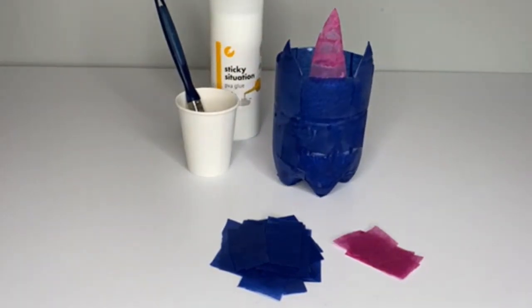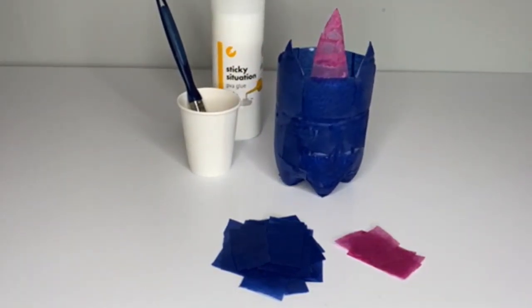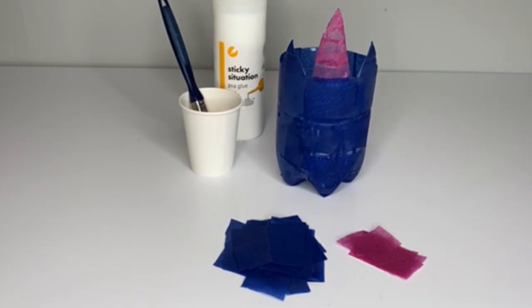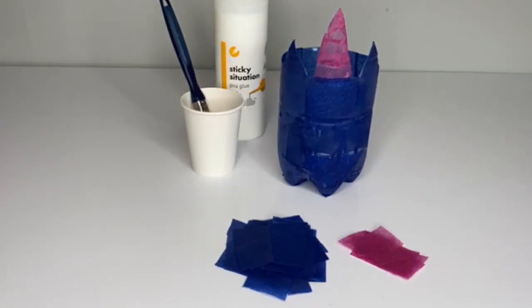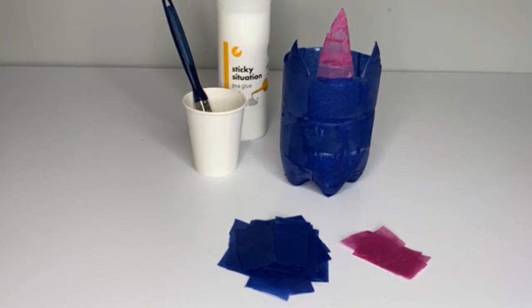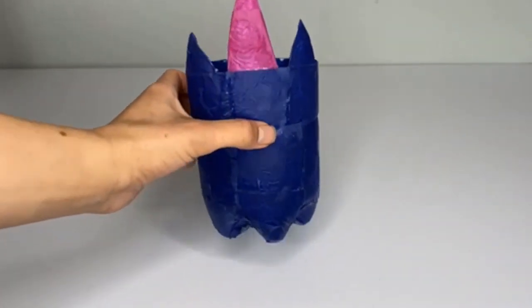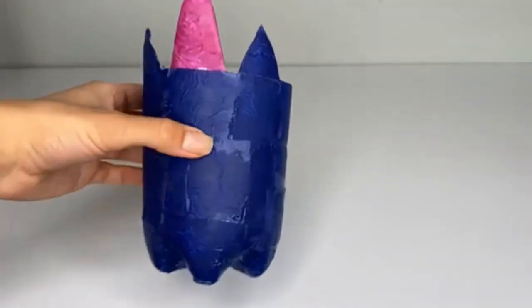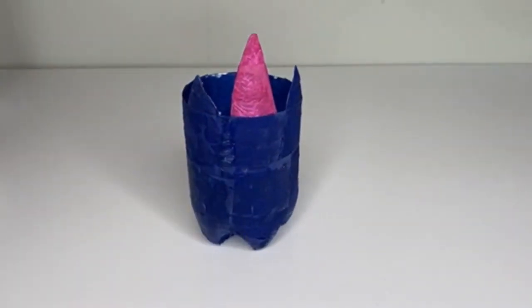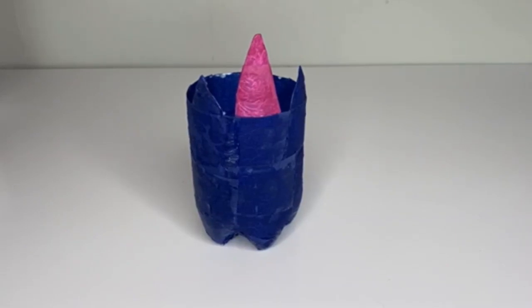Here is how it looks after applying one layer of the tissue paper. You can stop at one layer if you wish, however, applying a second layer will help to make the colors look more vibrant. Remember, if you are going to apply a second layer, you will need to let the base layer dry first. This is how it looks after applying the second layer. You will need to leave this to dry before moving on to the next step.